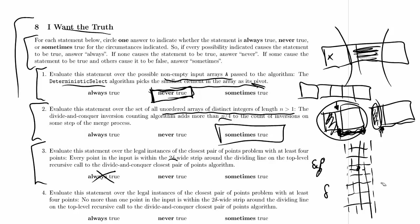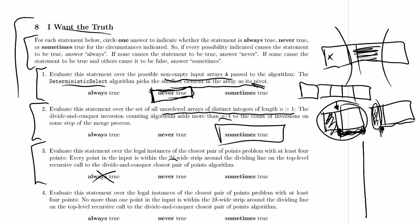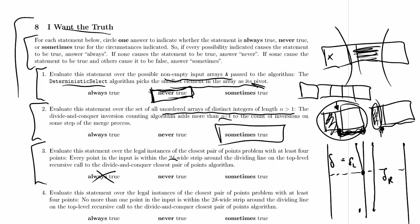The fact that it's not always the case means this is not always true. But let's try to construct an example where all points are inside the strip: place two points on the left and two on the right, all very close together. If delta is really large but all points are very close to the dividing line, then the 2-delta-wide strip is huge and sure enough, everything falls inside it. So it's not never true either — it can be true — which means it's sometimes true.